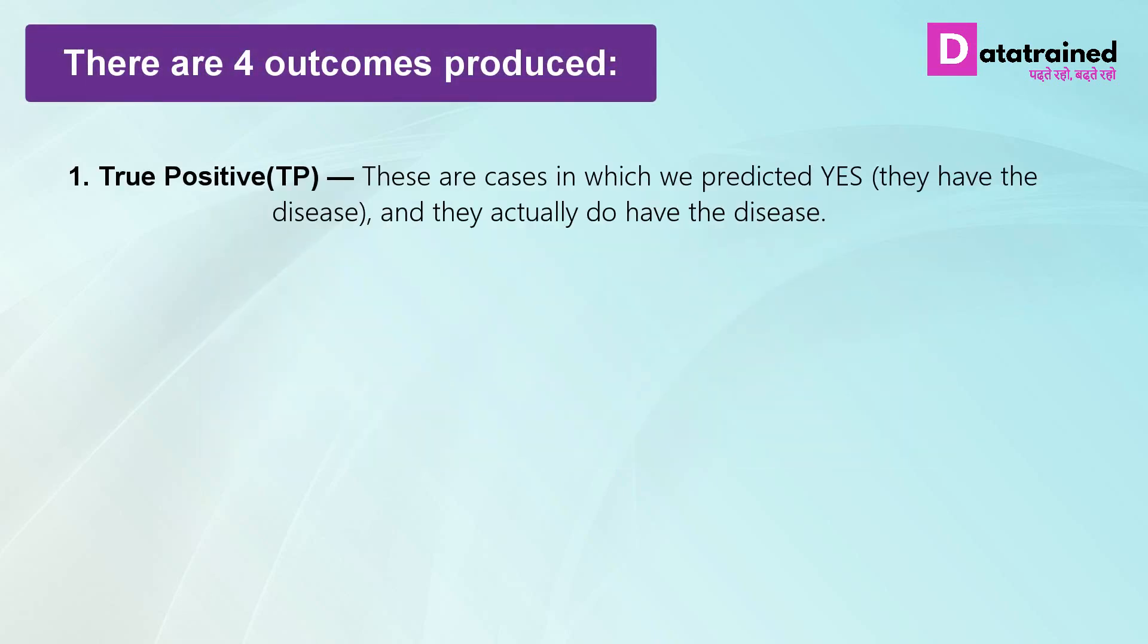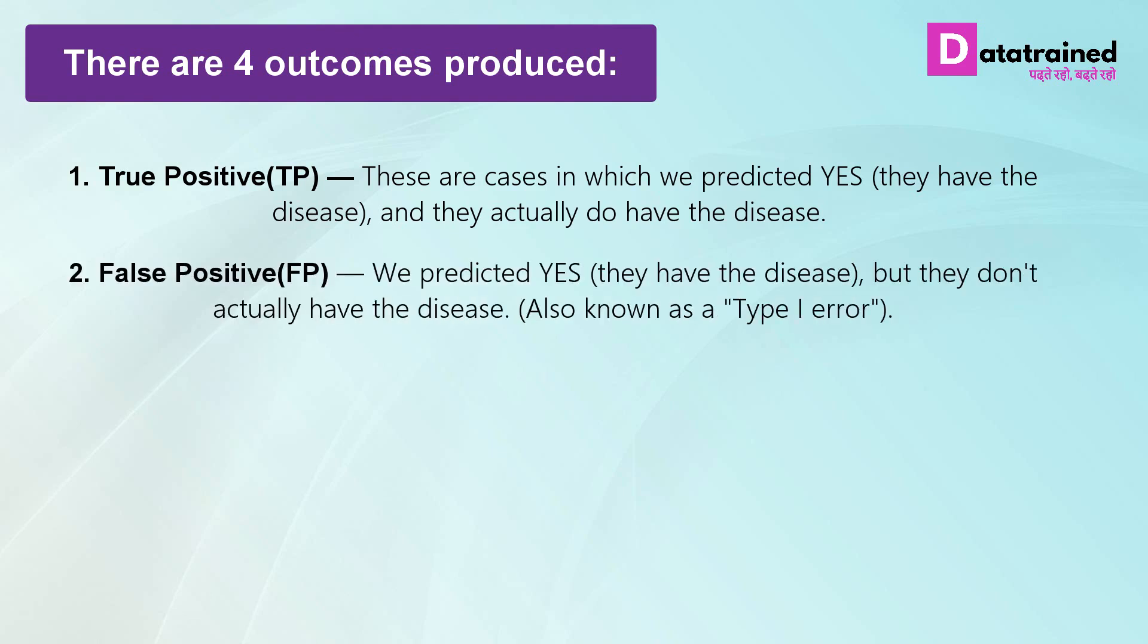True positive: These are cases in which we predicted yes, they have the disease, and they actually do have the disease. False positive: We predicted yes, they have the disease, but they don't actually have the disease. Also known as type 1 error.